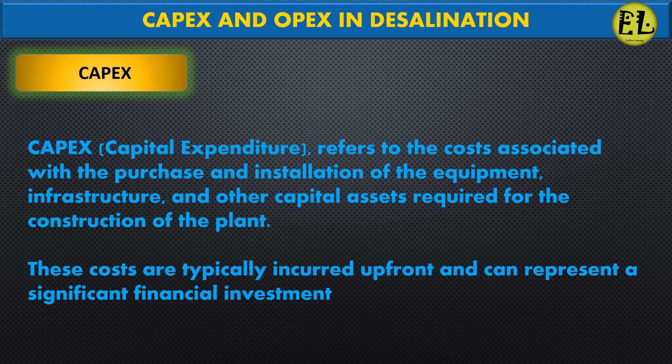Capex, or capital expenditure, refers to the costs associated with the purchase and installation of equipment, infrastructure, and other capital assets required for the construction of the plant. These costs are typically incurred up front and can represent a significant financial investment.